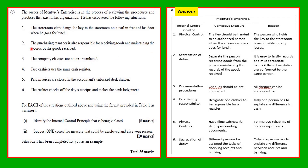Situation two: the purchasing manager is also responsible for receiving goods and maintaining the records of goods received. The internal control violated is segregation of duties. The corrective measure is to separate the person receiving goods from the person maintaining the records of goods received. The reason: it is easy to falsify records and misappropriate assets if these two duties are performed by the same person.